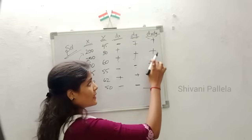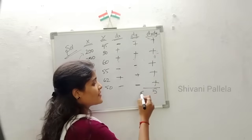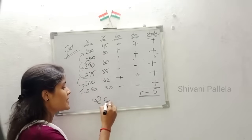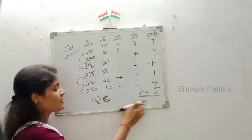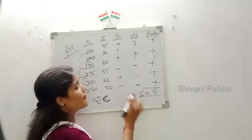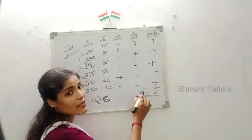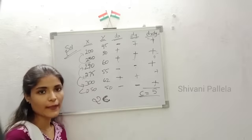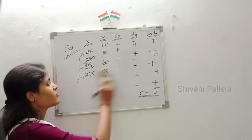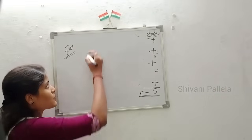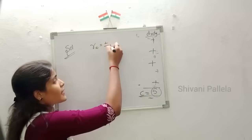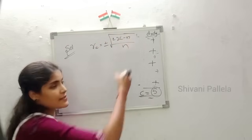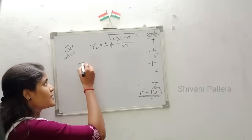Counting the plus signs in DX×DY: we get five. So C is equal to 5. Now we substitute into the formula: RC = plus or minus under root of plus or minus (2C minus N) by N. N is the number of observations; we have six observations, so N minus 1 equals 5.